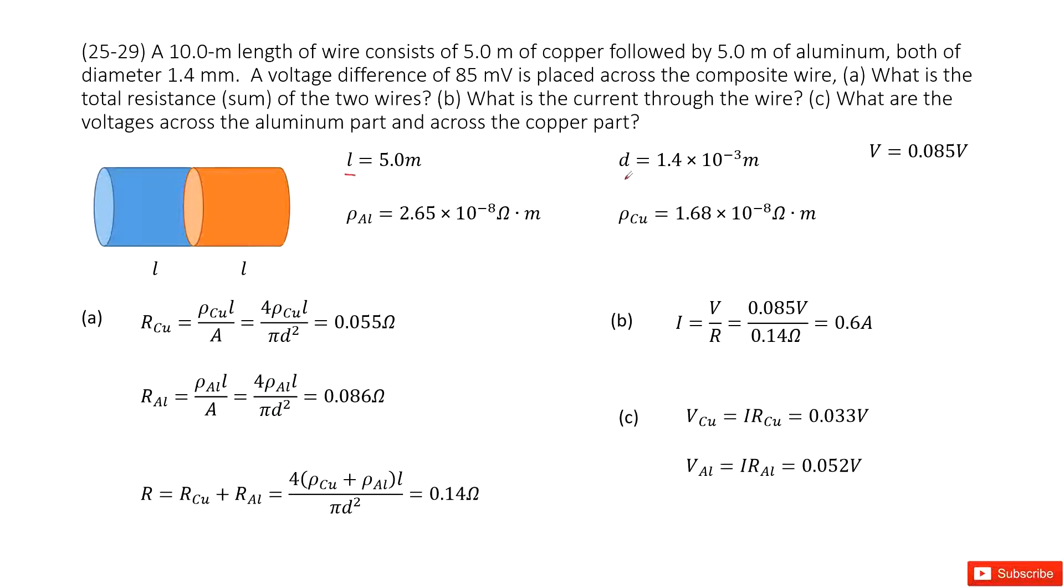We write it down. The diameter is given 1.4 millimeters and the voltage across this wire is given, 85 millivolts right down there. It asks you what is the total resistance of the two wires? You can see the sum of these two wires. We need to find the wire for copper and another wire for aluminum.